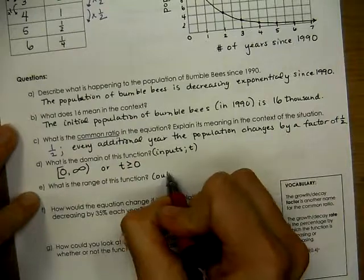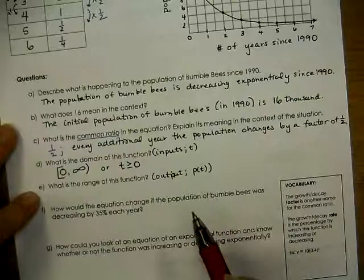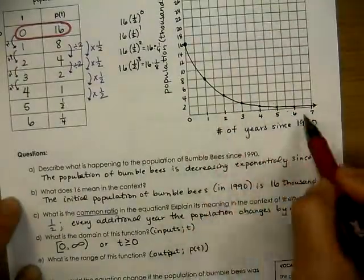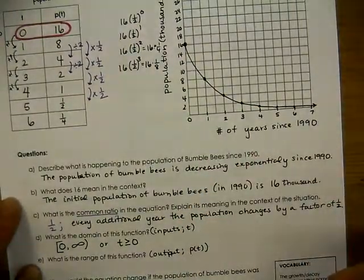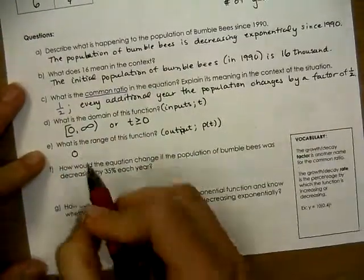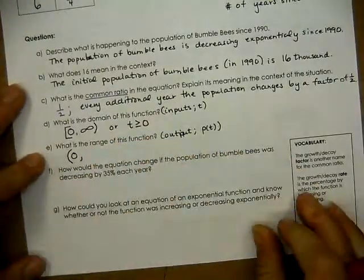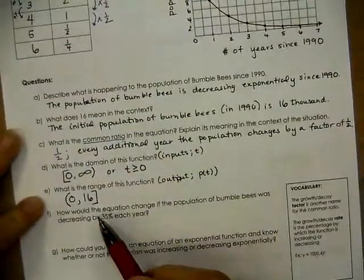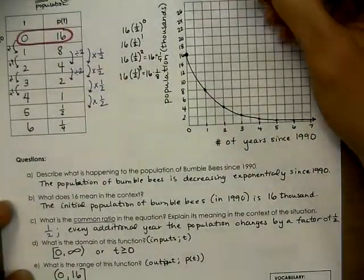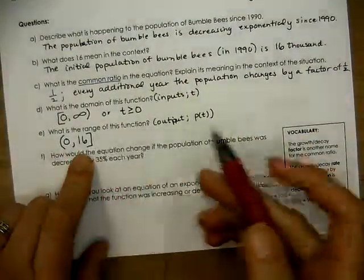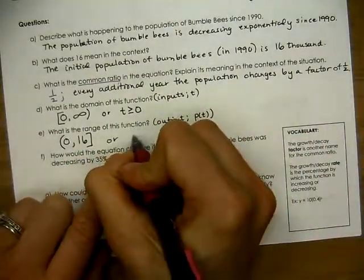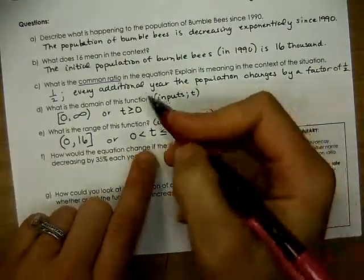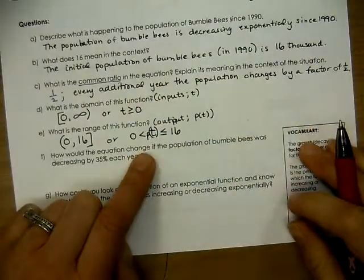What is the range? The range consists of the outputs — p of t, the population. The lowest value keeps approaching zero but never actually reaches it, so we don't include zero. The highest value is 16 — that's where we start — and we do hit 16, so we include it. The range written as a compound inequality is: 0 < p(t) ≤ 16. Without context the range would go up to infinity, but here 16 is the maximum.